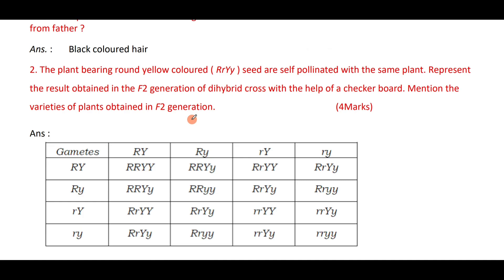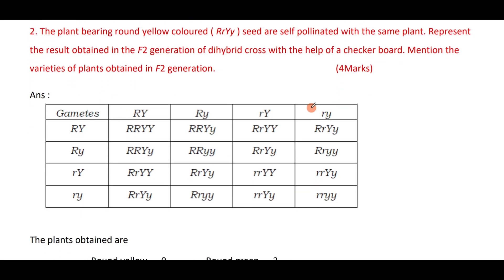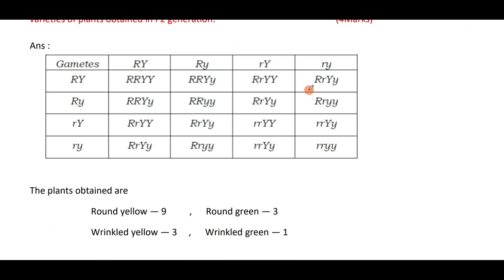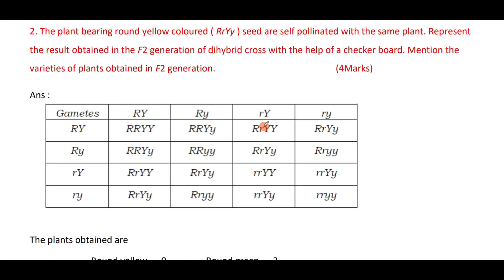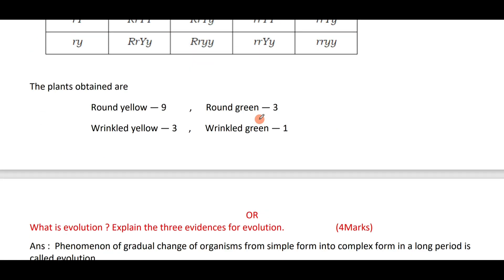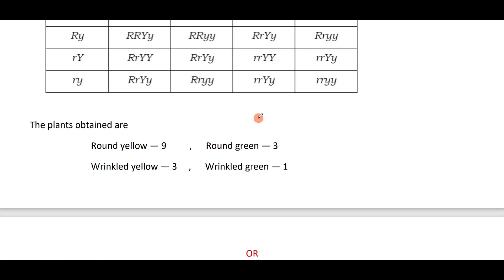A plant bearing yellow colored seeds is self-pollinated. Represent the result in the F2 generation of a dihybrid cross with the help of a checkerboard, mentioning the varieties of plants produced. This is the dihybrid cross experiment — a cross between two individuals differing in two traits. Do learn the monohybrid cross experiment and also the dihybrid cross experiment. I will explain these two experiments in detail in a separate video.